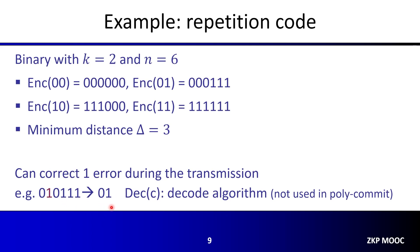That is the original application of error-correcting codes. The process to derive the original message from a received codeword is called the decoding algorithm. An interesting thing to note is that in our polynomial commitment scheme, we are not going to use the decoding algorithm at all, so we can actually use error-correcting codes without efficient decoding.